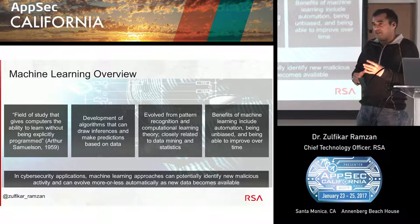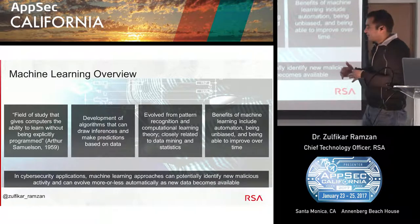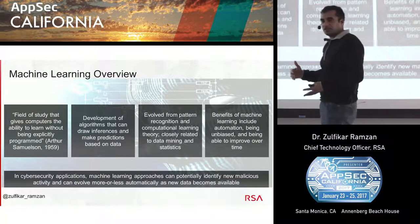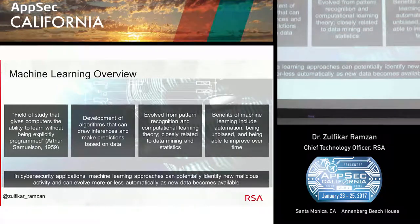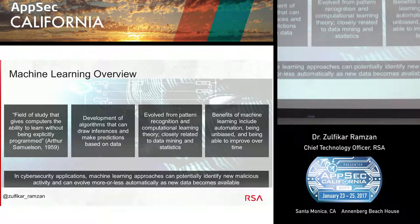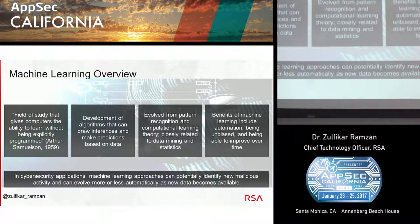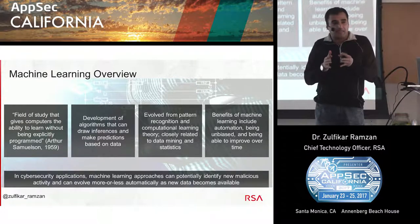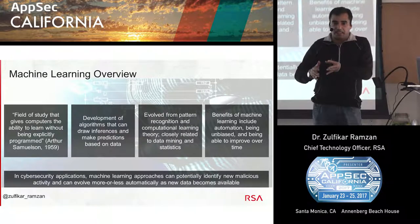The reason machine learning has gotten popular attention is it enables automation — you can actually try to learn automatically from data. Machine learning in theory should be unbiased because it's based directly on the data source, not introducing human biases. And there's an element where you can improve over time; as new data comes in, machine learning techniques can evolve automatically. For security specifically, this is interesting because it enables some level of automation — can we come up with models to identify malicious activity and enable those models to evolve as you get new data about attack behavior?